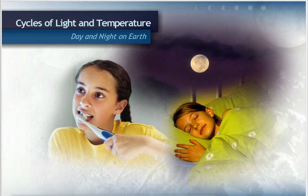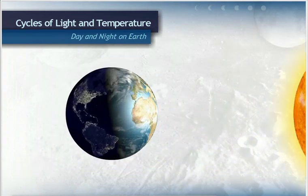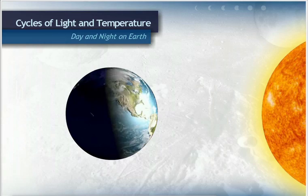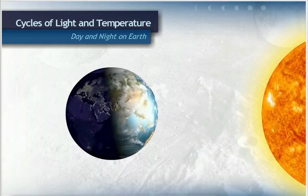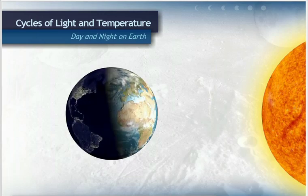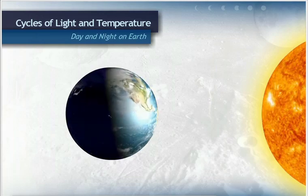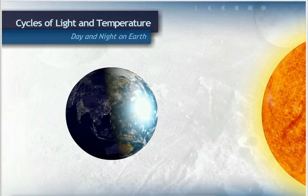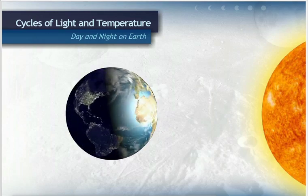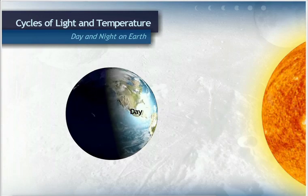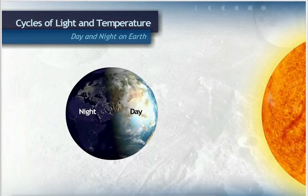But what causes the change from day to night? The earth is rotating as it orbits around the sun. Every 24 hours, it rotates one time. As it rotates, one half of the earth faces the sun and one half faces away from the sun. The half facing the sun receives sunlight and has daytime. The half of the earth facing away from the sun experiences night.